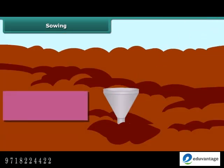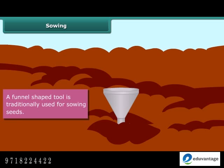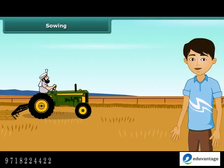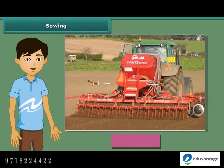Look at this farmer — he has a funnel-shaped tool for sowing seeds. He is filling seeds into the funnel and passing them down through the sharp ends of the pipe to get them seeded in the soil. This is a traditional method and very easy. Nowadays, farmers use modern seed drills for sowing with the help of tractors. A seed drill sows the seeds uniformly at proper distance and depth, ensuring that seeds get covered by the soil after sowing. This process also saves a lot of time and labor.